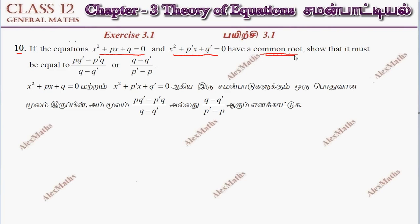If we have two equations, we have two roots. But one root is the common root. That's why, since we have a common root, we have two equations to substitute and satisfy. Let the common root be alpha.